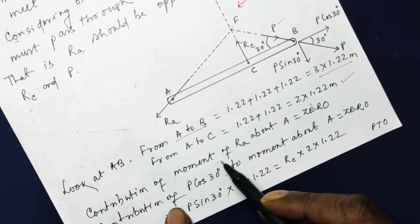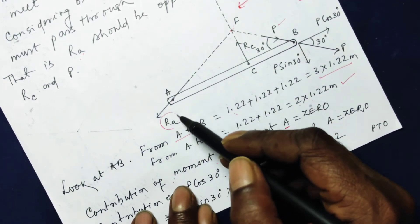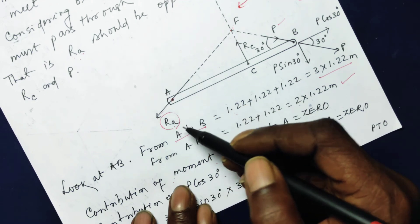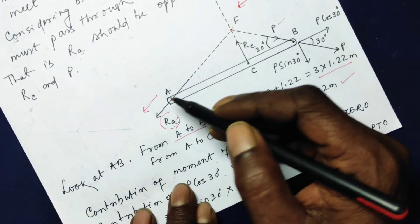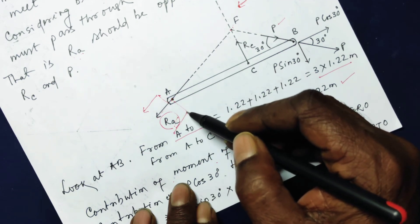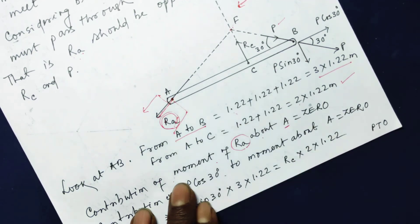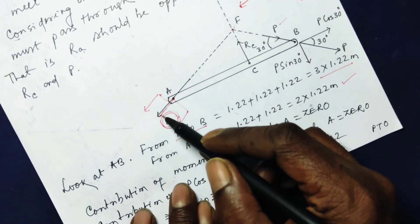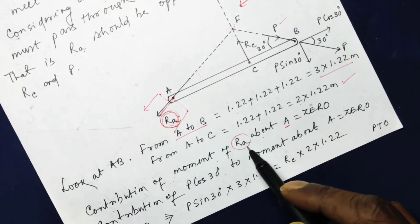The contribution of the moment of RA about point A is zero, because RA passes through point A. That is, the line of action of RA does not have a perpendicular distance from point A, so RA does not produce any turning effect about point A.